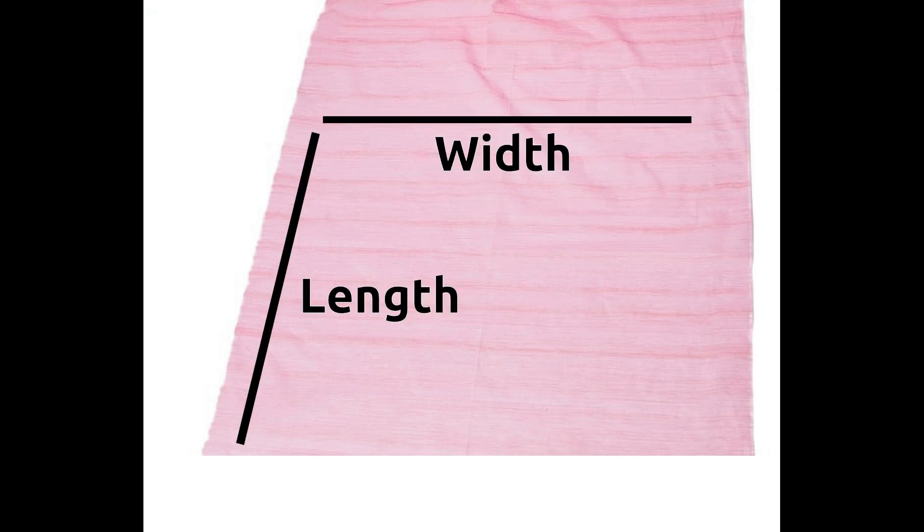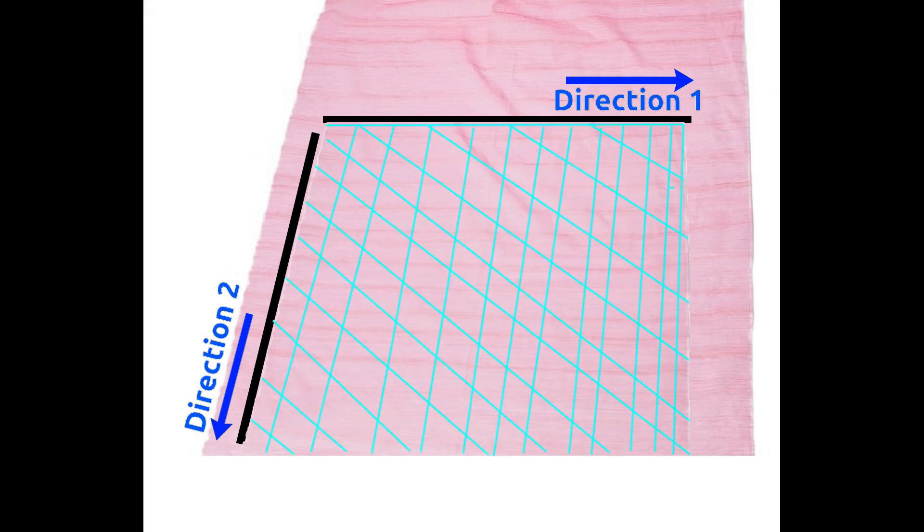When you buy cloth sheet, you generally tell shopkeeper two types of lengths. You specify the measure of width and length, to which shopkeeper measures the cloth in two different directions. Area of an object is always measured in two directions.